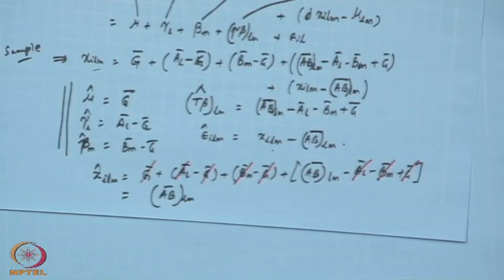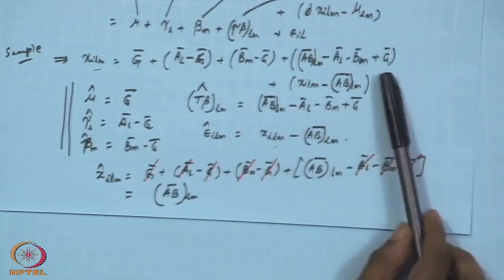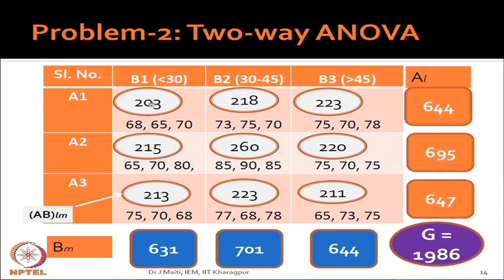If we go back to the data, the predicted value for each combination is the average of the observations in that cell. For the first three observations, their predicted value is the cell mean of the A1-B1 combination. The second cell average is the predicted value for all three observations in that cell, and so on. So every three observations in the same cell share the same predicted value.